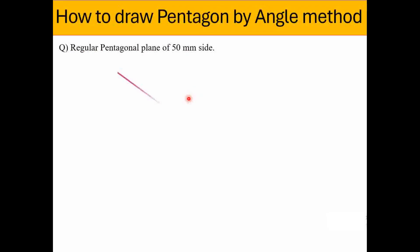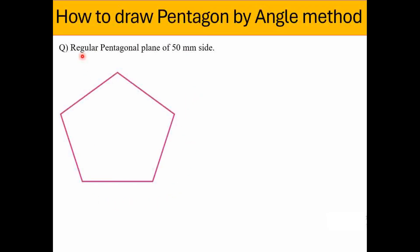As all of you know, the pentagonal structure has five sides, and if it is a regular pentagon, each and every side has the same dimension — that is 50 mm, 50 mm, 50 mm. This is the nature of the pentagonal plane.